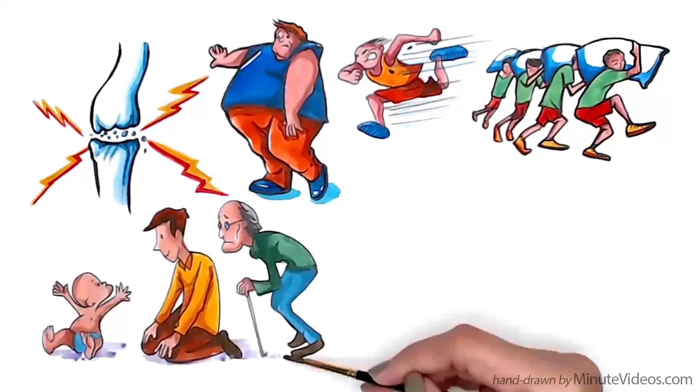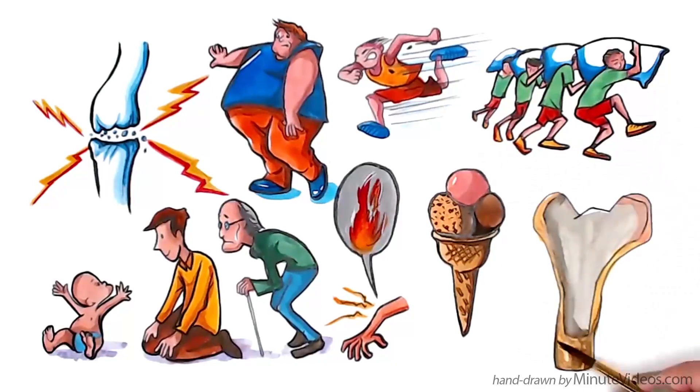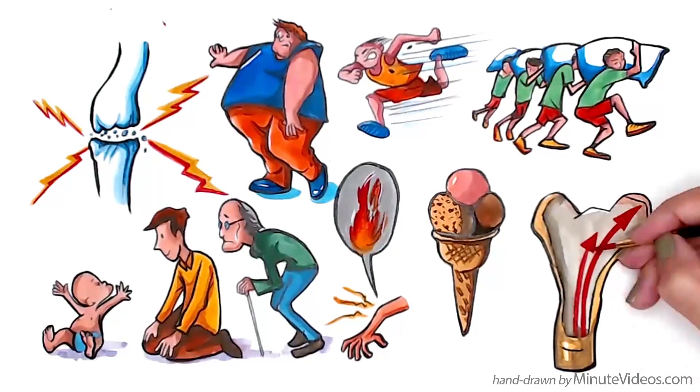Osteoarthritis is also linked to genetic predispositions, inflammation, diet and damage to the bone underneath the cartilage which supplies the cartilage with nutrition.